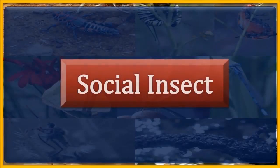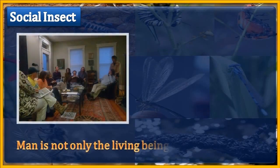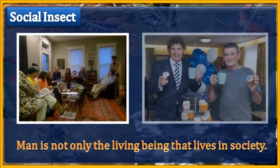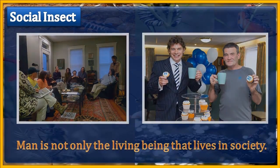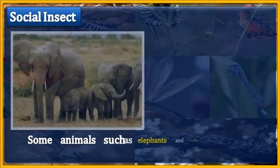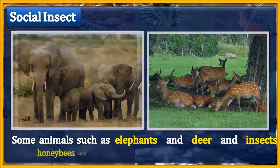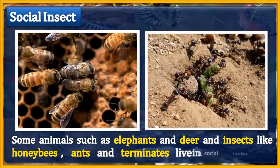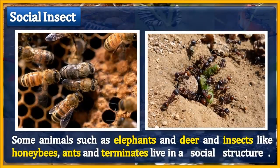Social Insects. Man is not the only living being that lives in society. Some animals such as elephants and deer, and insects like honeybees, ants and termites, live in a social structure.